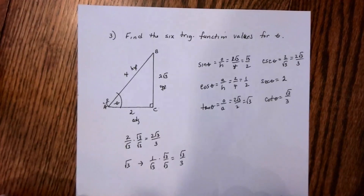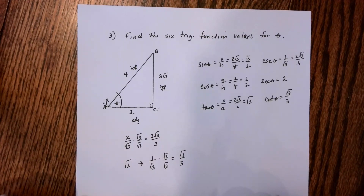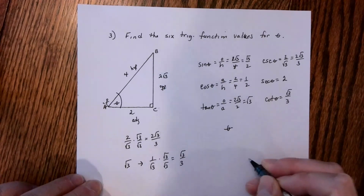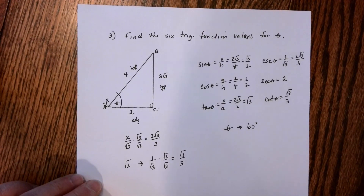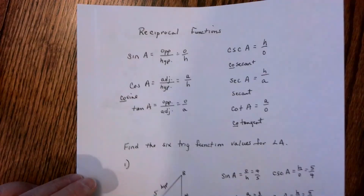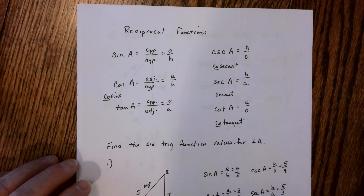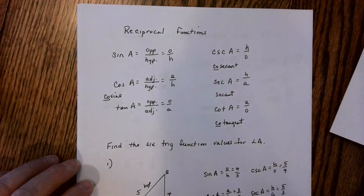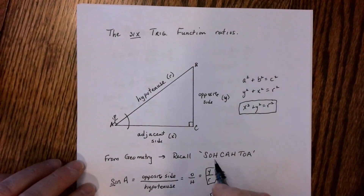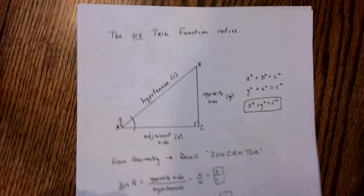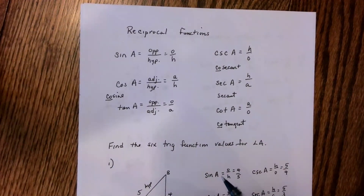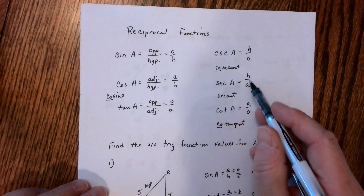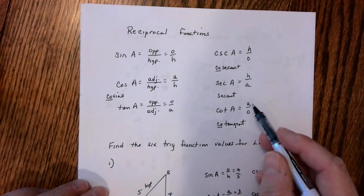Now I've found my six trig function values. Eventually we'll learn that angle theta is actually 60 degrees, and that's where we're moving in our next lesson — assigning angle measurements to trig function values. To recap, the six trig function values: sine is opposite over hypotenuse, cosine is adjacent over hypotenuse, tangent is opposite over adjacent, cosecant is hypotenuse over opposite, secant is hypotenuse over adjacent, cotangent is adjacent over opposite.